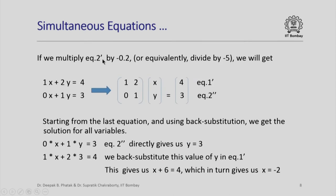Let us look at further operations. If we multiply equation 2 prime by minus 0.2, or equivalently divide the whole thing by minus 5, we will get 1x plus 2y equal to 4, 0x plus 1y equal to 3. Notice that we are following the same rules and therefore this system is same as the previous system. But now the matrix is 1, 2, 0, 1 and the right hand side is now 4, 3. We call them equation 1 prime and equation 2 prime.